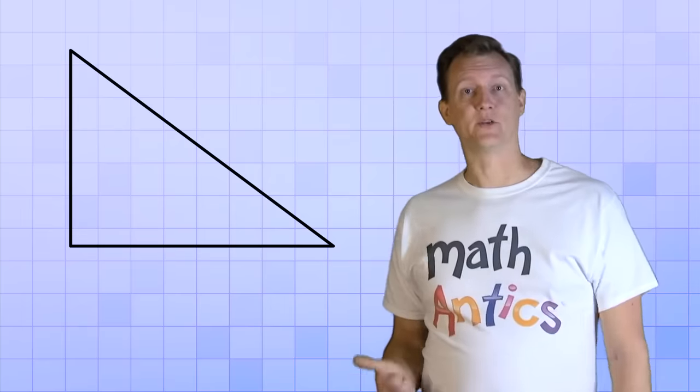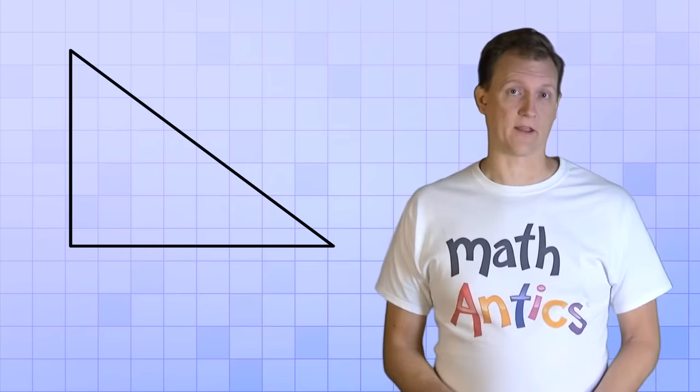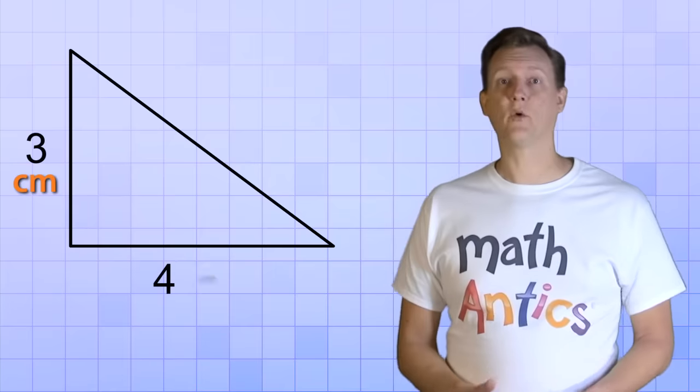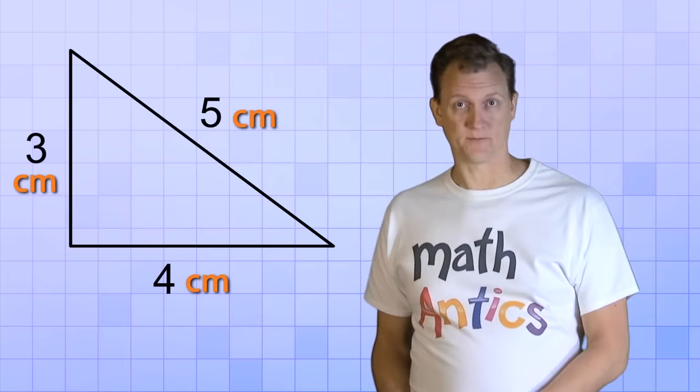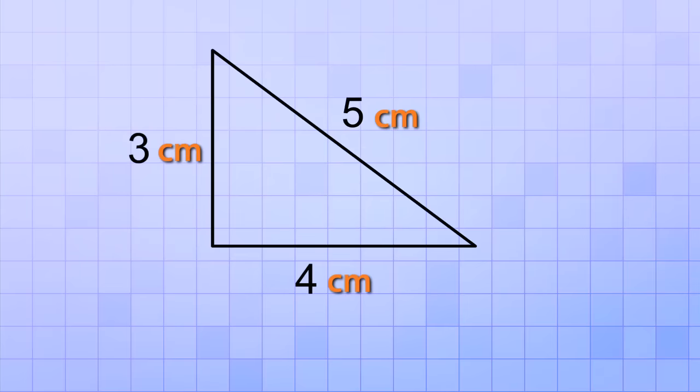The first polygon we'll try is a triangle. This triangle has three sides that are each a different length: 3 cm, 4 cm, and 5 cm. Now, to find the perimeter of the triangle, all we have to do is add up the lengths of those three sides. 3 plus 4 plus 5 equals 12.